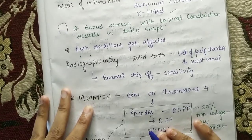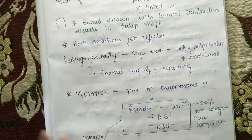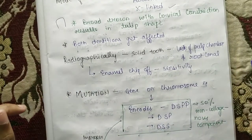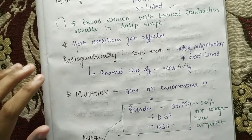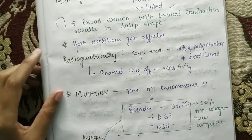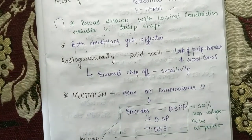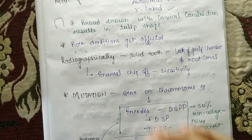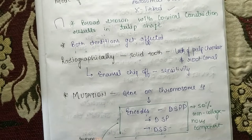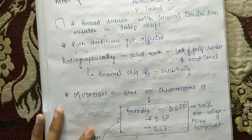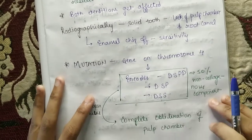Radiographically, there is a lack of pulp chamber and root canal. The pulp chamber is not completely absent but it is significantly reduced — pulp chamber bahot kama hota hai. Root canals are also reduced. Enamel chips off, jis ki wajah se sensitivity aa jayegi — bilkul basic si cheez hai.